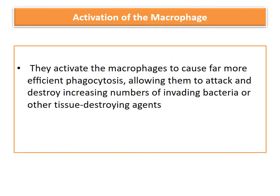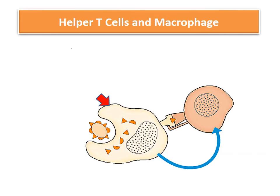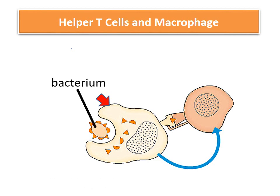Helper T cells activate the macrophages by increasing their accumulation in the inflamed area and then activating them to make their phagocytosis more efficient, thus allowing these macrophages to attack the invading bacteria and destroy them. This slide shows the pictorial representation of this process — you can see the macrophage and the bacterium.